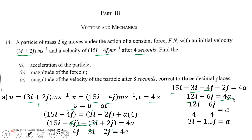That gives us acceleration = (3i - 1.5j) meters per second squared. Remember to add the unit because marks will be awarded for that.